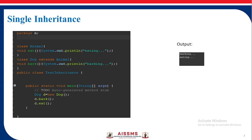Let us see an example. Here a class Animal is defined with a method eat(), containing the statement 'eating'. The class Dog extends the class Animal, and has a method bark() with the statement 'barking'. When we create the object of the Dog class — Dog d = new Dog() — and call d.bark() and d.eat(), we get the output as 'barking' and 'eating'.